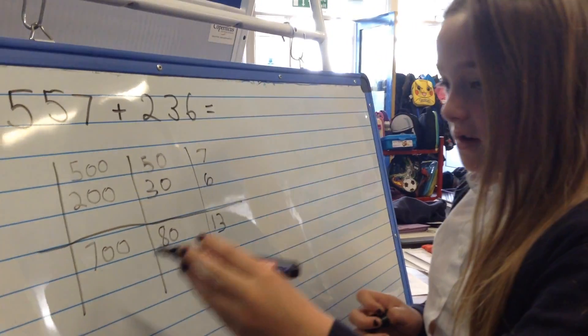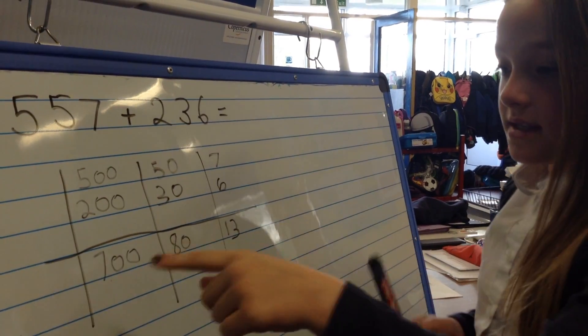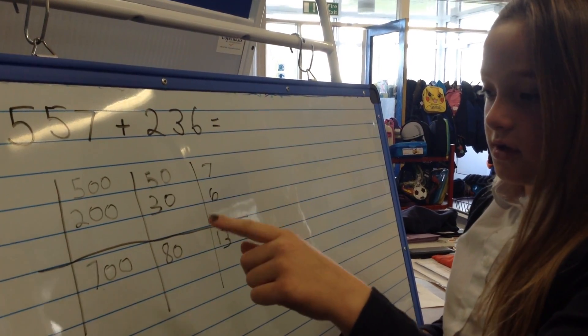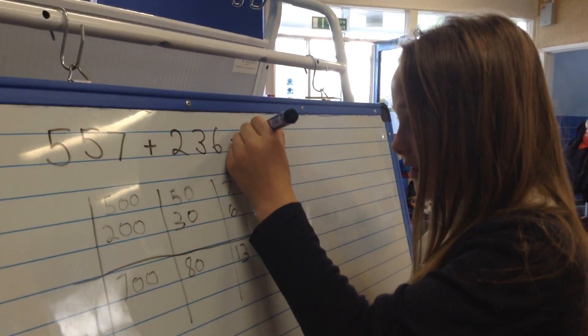And then you have to add 780 and 13. So you already know that it's 700. And then if you add a 10 onto 80 it will be 90. And then add the 3 which would be 793.